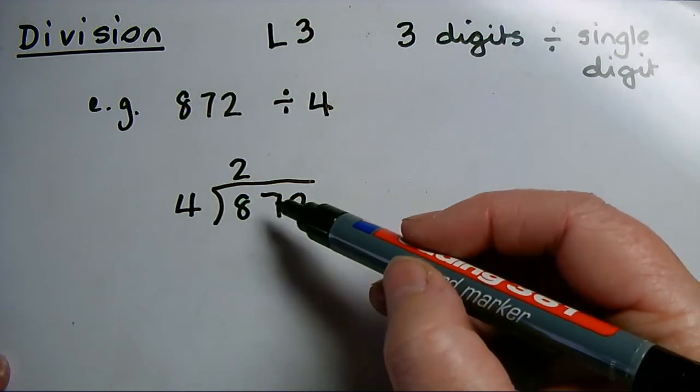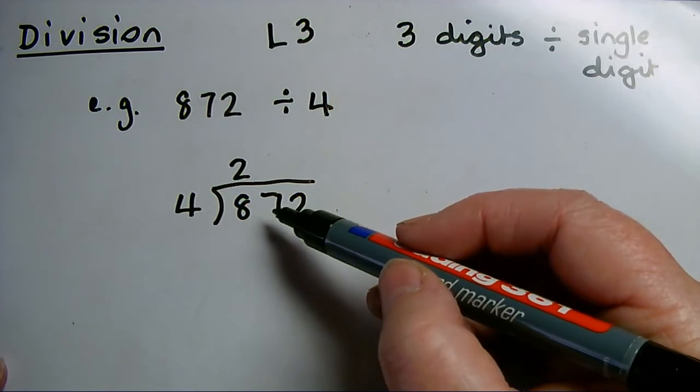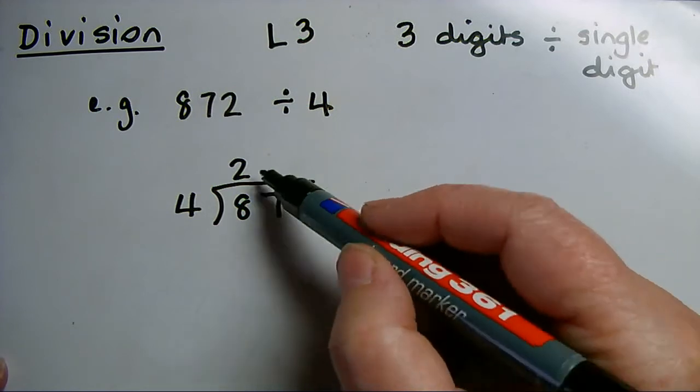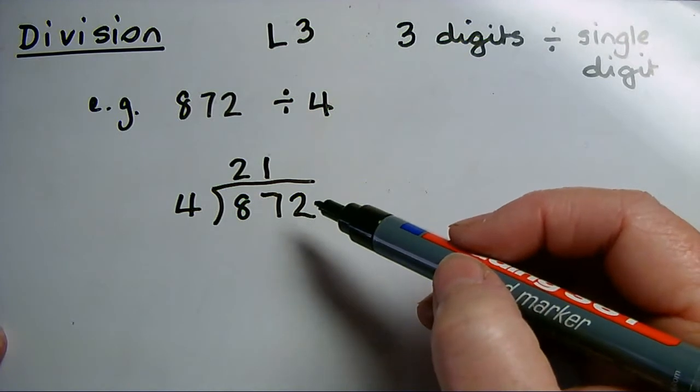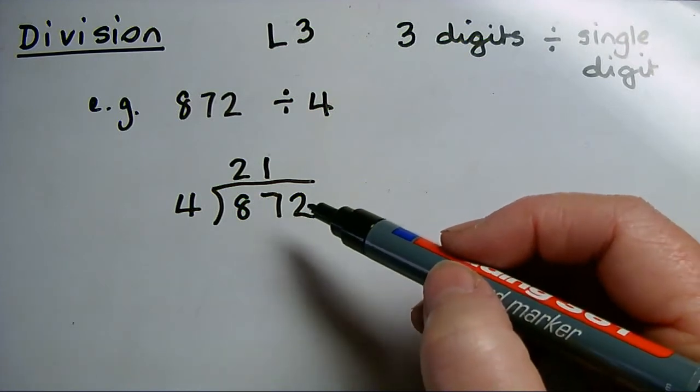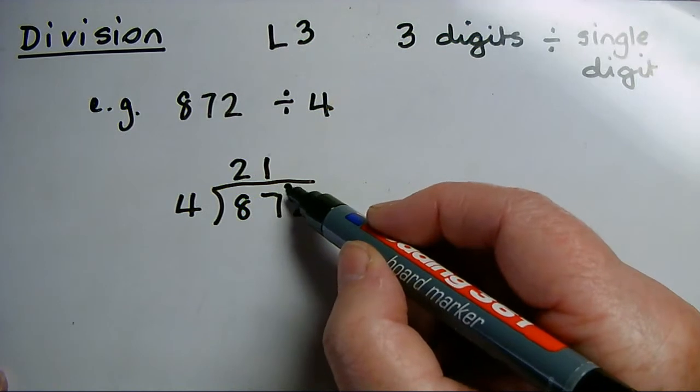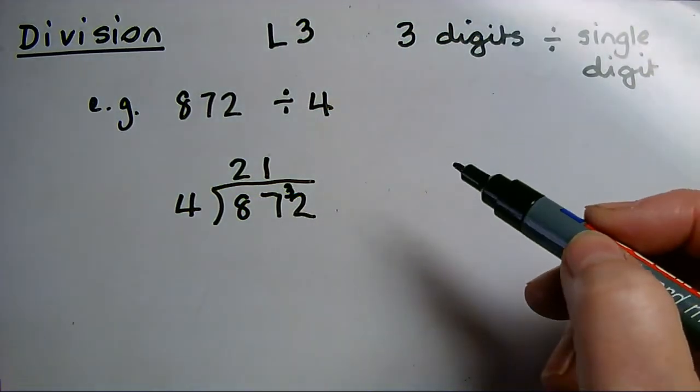How many 4s can I get out of 7? I could get one 4 out of 7, so I can put that up at the top, but there would be a remainder of 3. I'd carry that remainder and put a little 3 just in front of that 2.